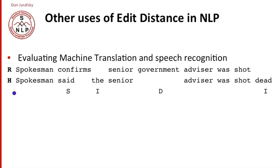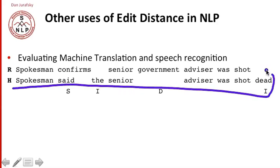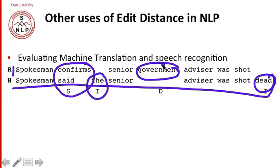So let's suppose that our machine translation system represented some sentence, maybe translated from Chinese, as the spokesman said the senior advisor was shot dead. And some human expert translator said it should have been spokesman confirmed senior government advisor was shot. So we can measure the difference between these two by saying how many words changed, confirmed was substituted with said, words that were inserted, the, and words and dead, and words that were deleted, government. So a way of measuring how good our machine translation is by comparing it to humans.